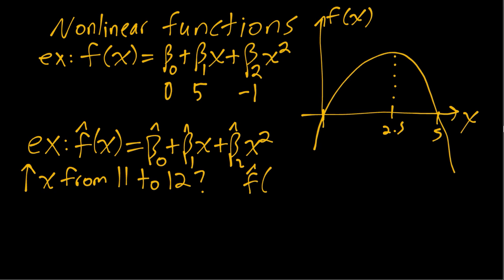So if we take f hat of 12 and then subtract f hat of 11, I'll plug in for those two in terms of the betas. We'll get beta hat naught.